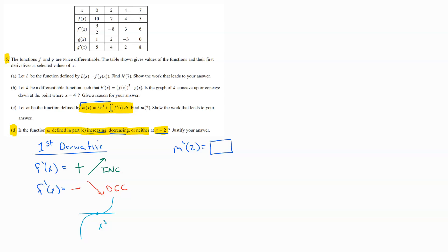Let's go then to our starting equations. We were given M of X is equal to 5X to the third plus the integral from zero to X of F prime of T dt. Step one of this process is just going to be to find the derivative of that.